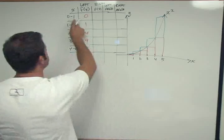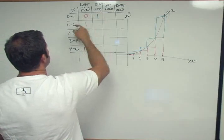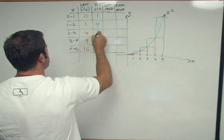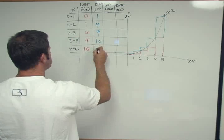And then on the right-hand side, 0 to 1, 1 squared is 1. 2 squared is 4. 3 squared is 9. 4 squared is 16. 5 squared is 25.